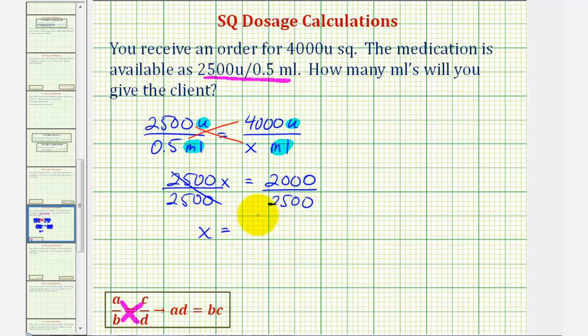So we have X equals this quotient here. If we're doing this by hand, it's helpful to simplify this fraction first. Both of these are divisible by 500, so if we divide the top by 500 and divide the bottom by 500, this would give us 4 fifths, which would be the number of milliliters needed in fraction form.